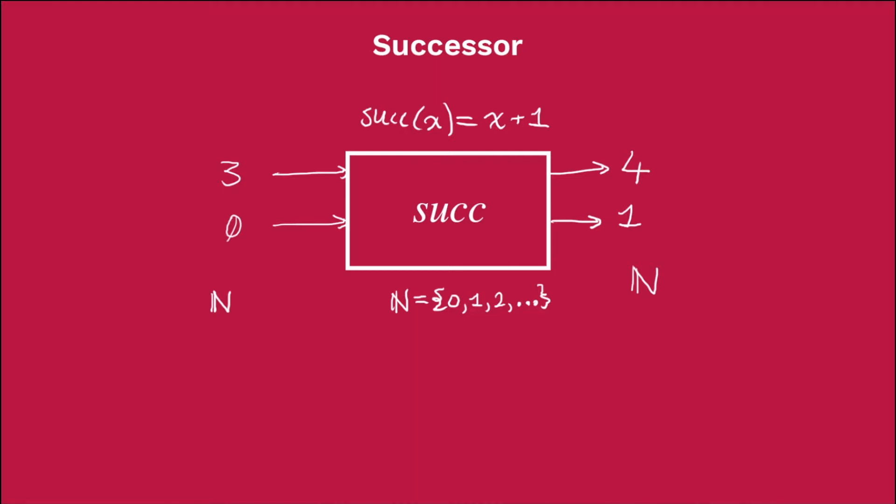Now you may ask why we're restricting ourselves to 0 or greater, why we're using natural numbers, why we're not using the integers. Well the reason for that is this is how we define the basic functions in the primitive recursive set of functions. So we don't consider negative numbers ever in the set of primitive recursive functions, so we use the natural numbers.